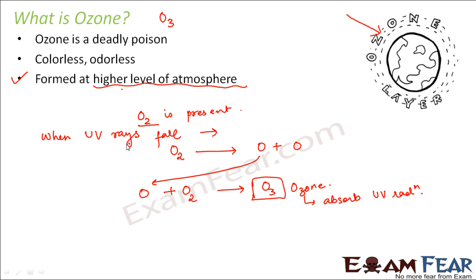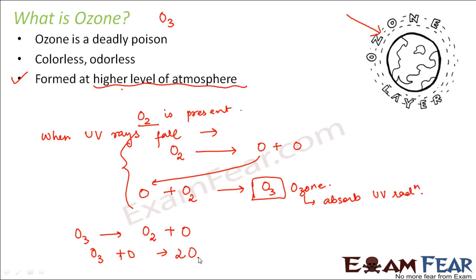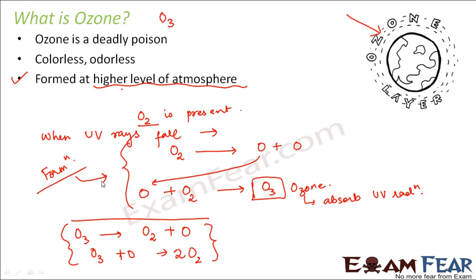Now ozone breakdown can also happen. Ozone breaks down to form an oxygen molecule plus one atom of oxygen. In fact, when ozone is oxidized, it forms two molecules of oxygen. This is how the conversion of ozone into oxygen takes place. So this is how the formation of ozone takes place, and this was of prime importance here. So now we know how ozone is formed and how ozone acts as a protection against ultraviolet radiation.